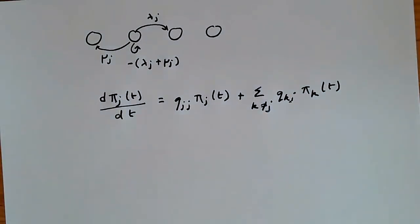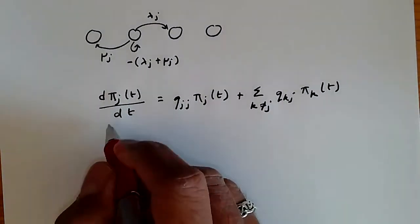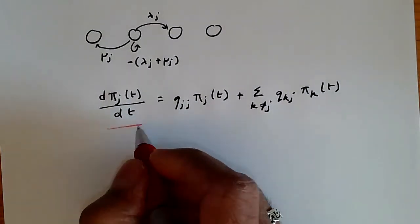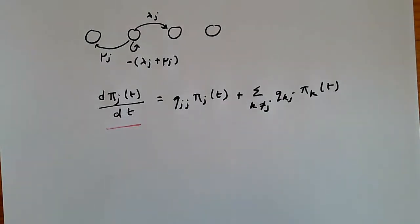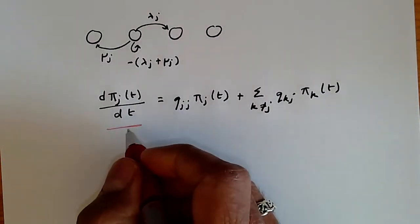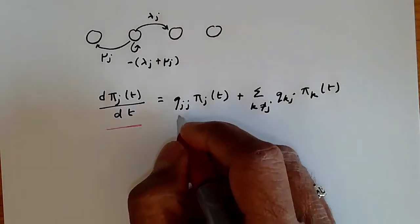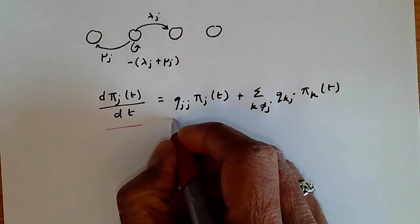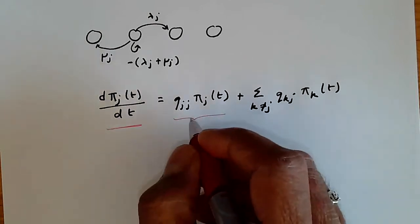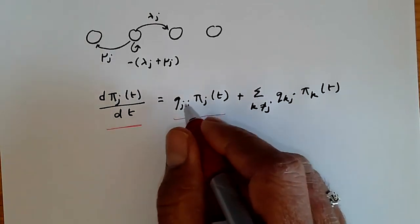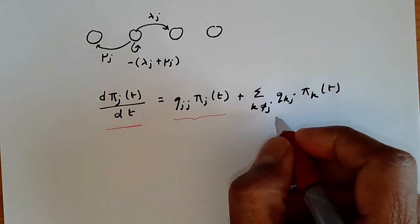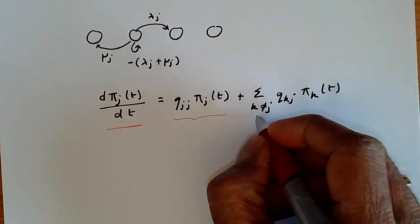So to understand this equation, what you're saying is that the rate at which the probability of being in the state changes is the self rate, the rate of staying in that same state, plus for all other states k such that k is not equal to j.